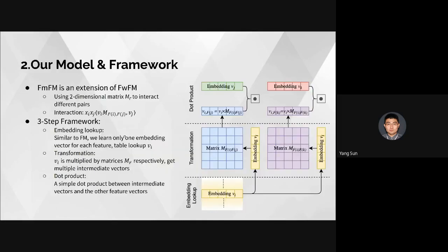In the second part, we show our model and framework. This diagram shows how the FM-Square model works. Basically, FM-Square is an extension of the field-weighted factorization machine. It uses a two-dimensional matrix M to interact different pairs inside a scalar in the FWFM.